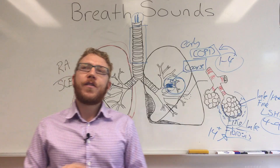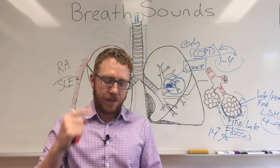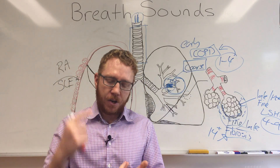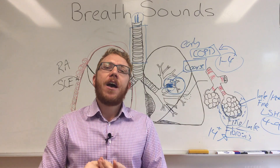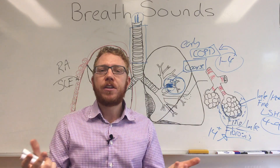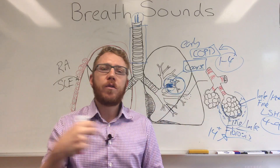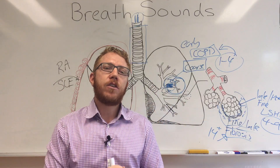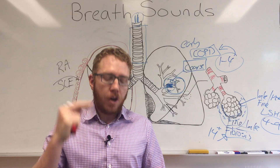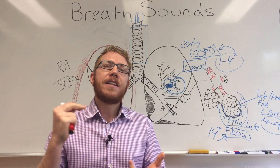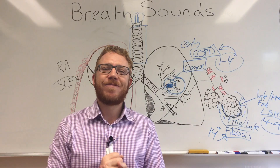Hopefully you now have a better idea of the four abnormal breath sounds: wheezing, crackles, stridor, and the pleural friction rub. You've heard what they sound like, so when you auscultate a patient's chest you'll know what to listen out for. You also now know the mechanisms of what causes them and the diseases or dysfunctions that can lead to each one.